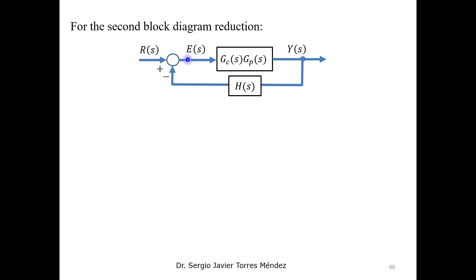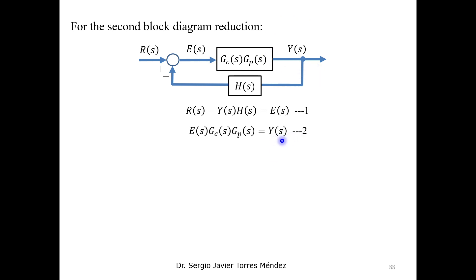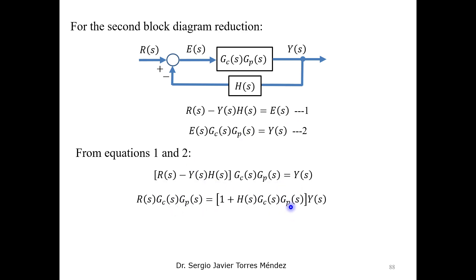We write two equations: the first equation relates the reference minus the sensor signal multiplied by the input, equal to the error. The second equation comes from the error times the combined block equal to the output y. We then substitute the first equation into the second and perform the algebraic operations.